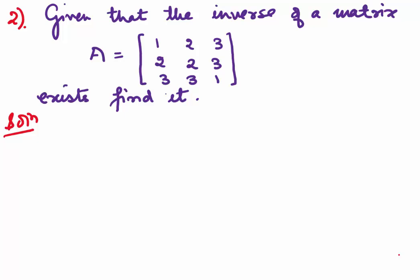Let's come to the second example. Here we are given a matrix A of order 3 and we are told that the inverse exists and are asked to find it. If you want to verify, we can find the determinant. As mentioned earlier, the determinant should be non-zero.